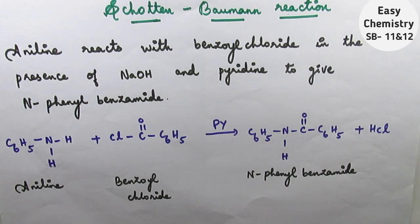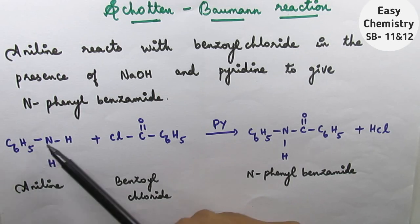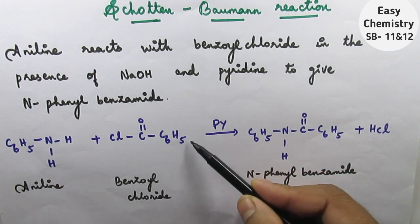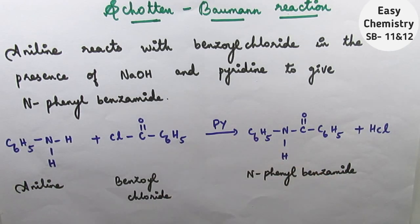Now let's see the reaction. And here is structure, C6H5NH2. It reacts with benzoyl chloride. It is benzoyl chloride. C6H5COCl. Benzoyl chloride.